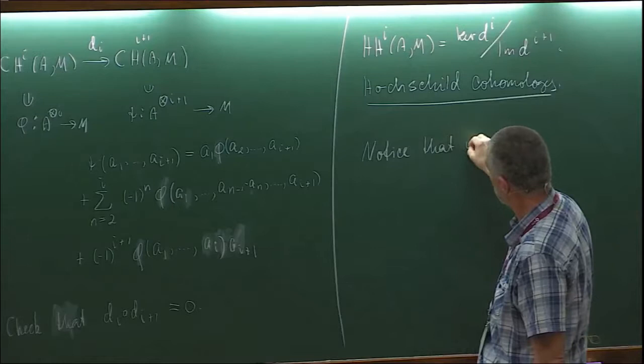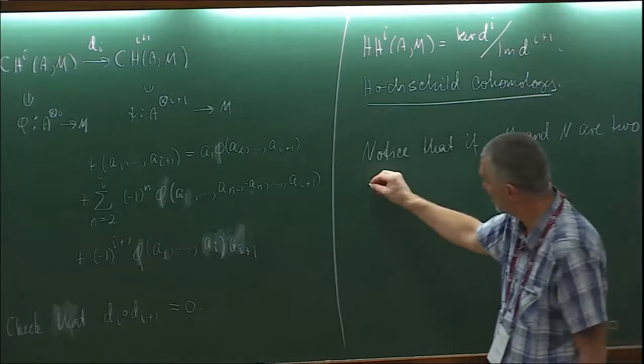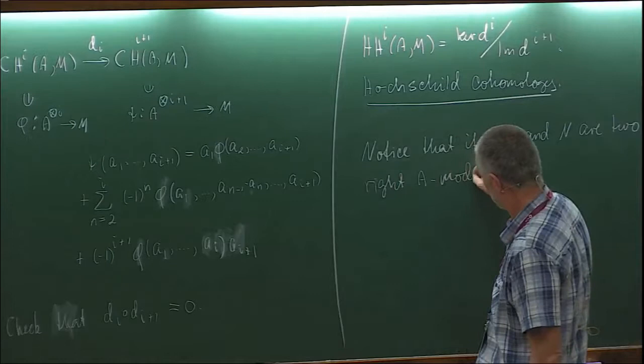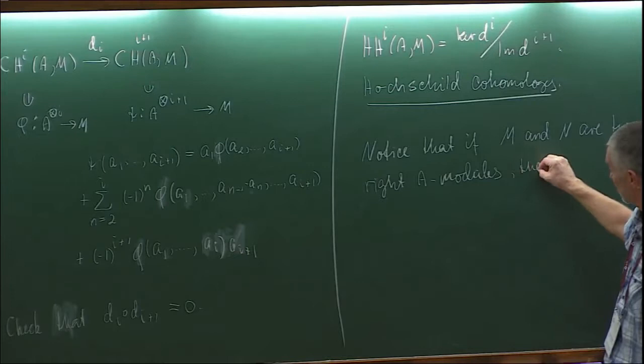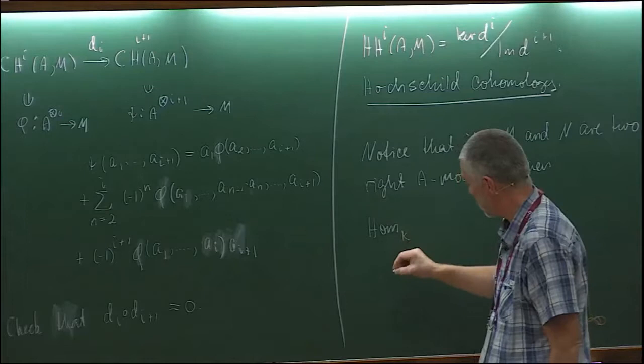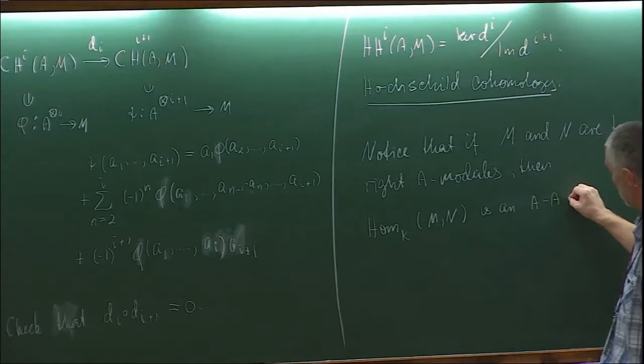This is Hochschild cohomology. Notice that if M and N are two right A-modules and A is a K-algebra exactly as before, then Hom_K — the K-linear maps from M to N — is an A-A bimodule.